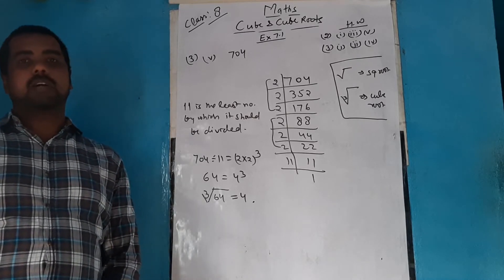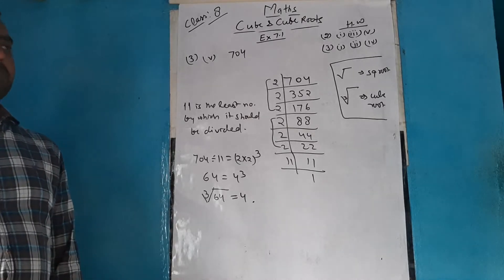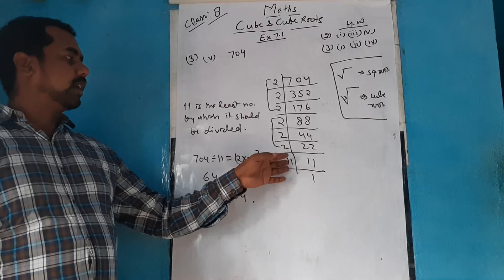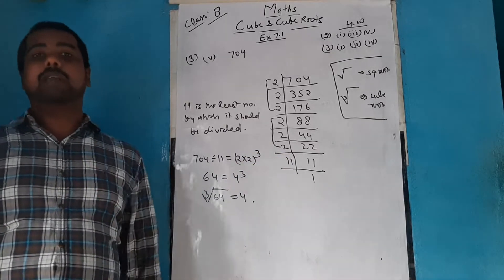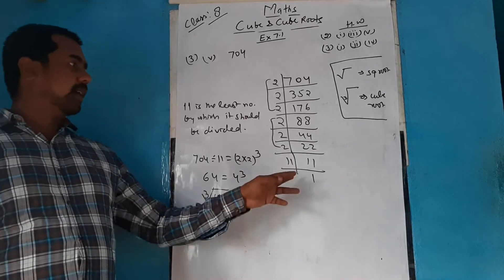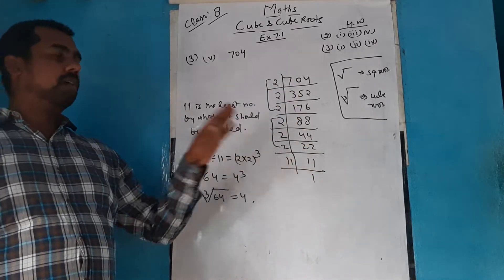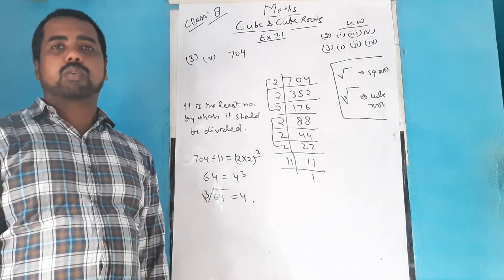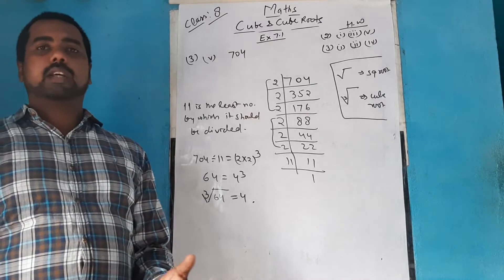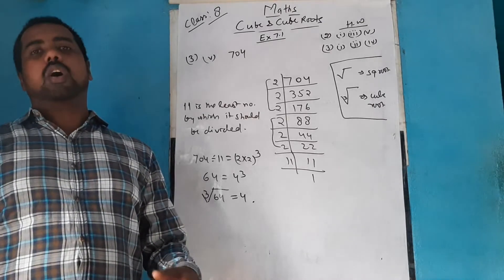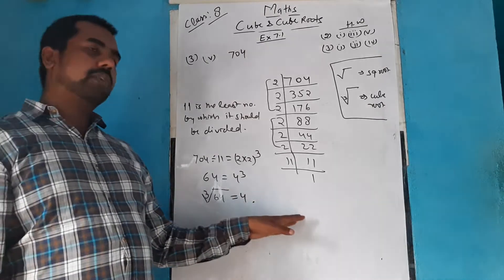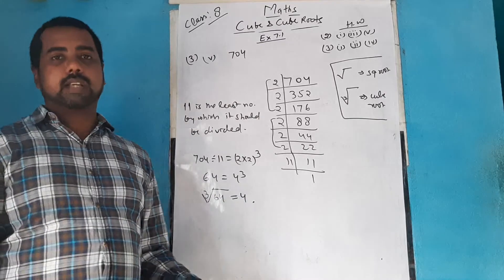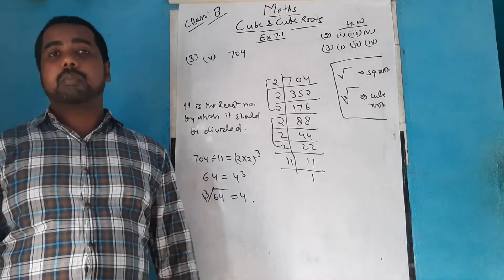In the remaining parts, apply the same method. When asked for the least number to be multiplied, form pairs of 3 and check which numbers are not in a pair — multiply by those. For example here, if it were asked to multiply, I would have multiplied by 11 × 11 = 121. When asked for the least number to be divided, divide by the number not forming a pair of 3. This is the same concept as in the previous chapter on squares and square roots.